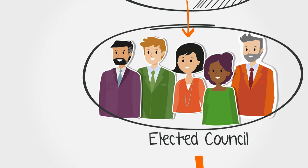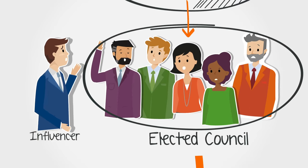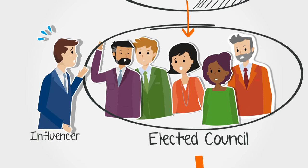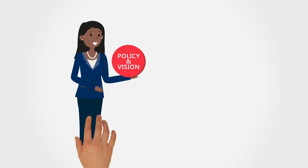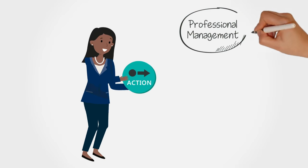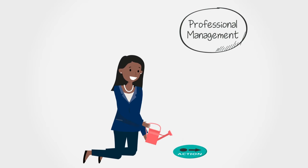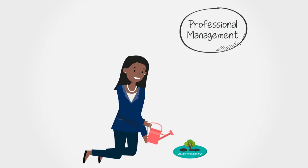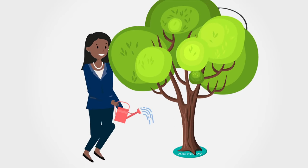Having the entire elected council setting policy makes it difficult for special interest groups to influence policy. But the council-manager form of government isn't just about curtailing corruption — it's about managing services in ways that get better results.